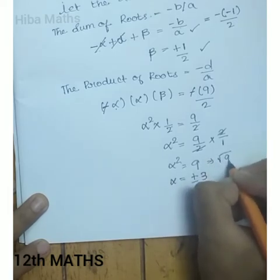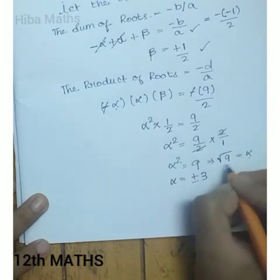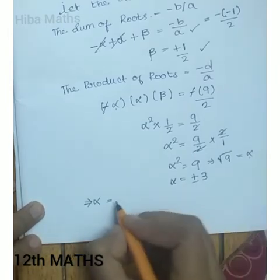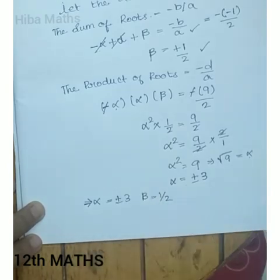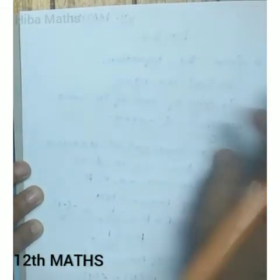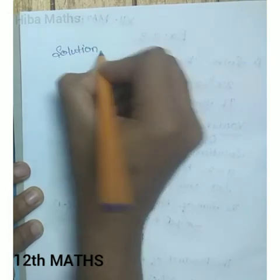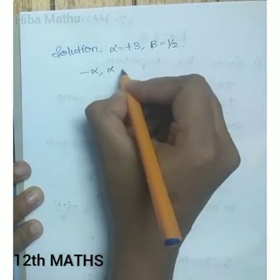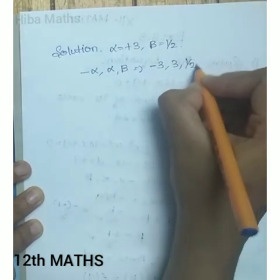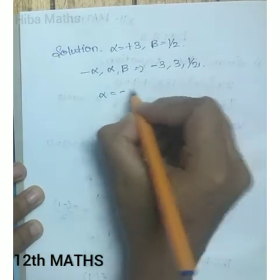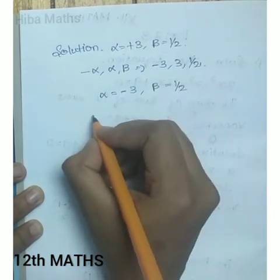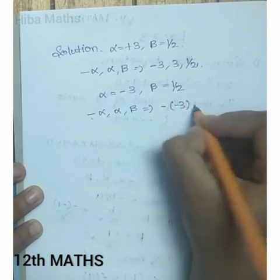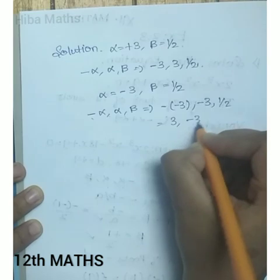Taking the square root of 9, alpha = ±3 and beta = 1/2. The solution set has roots equal to -α, α, and β. So the roots are: -3, 3, and 1/2.